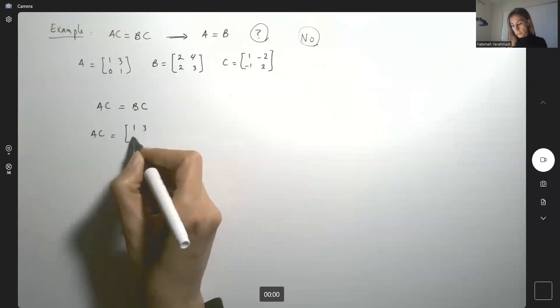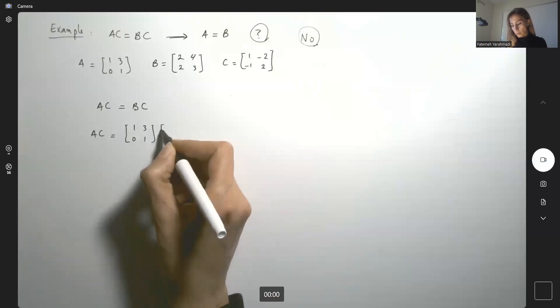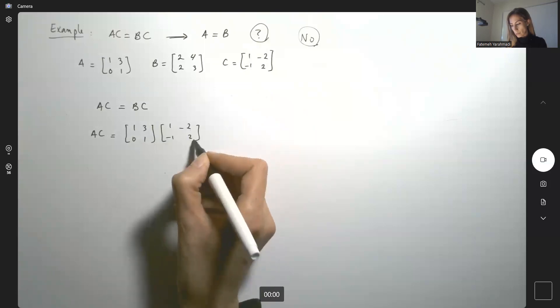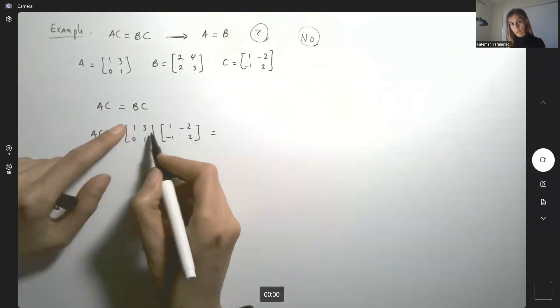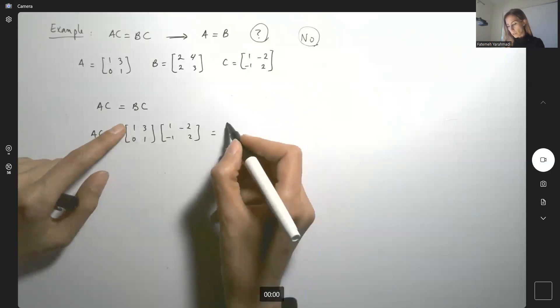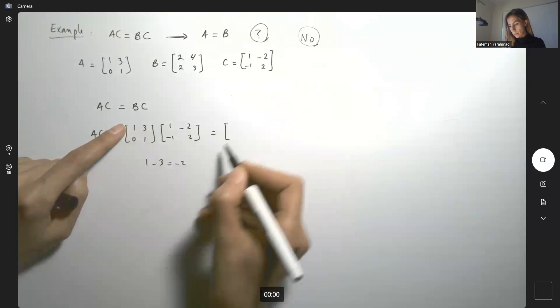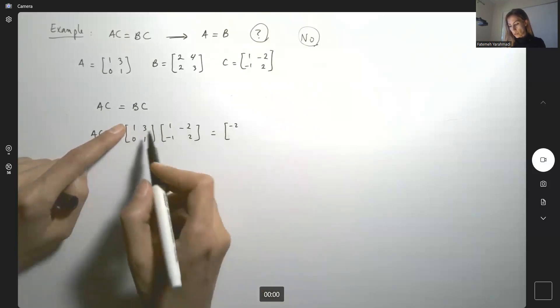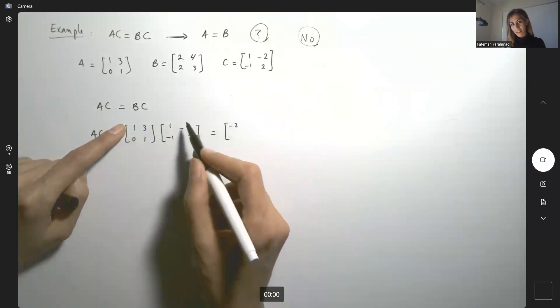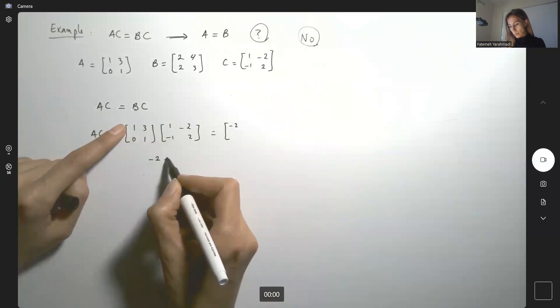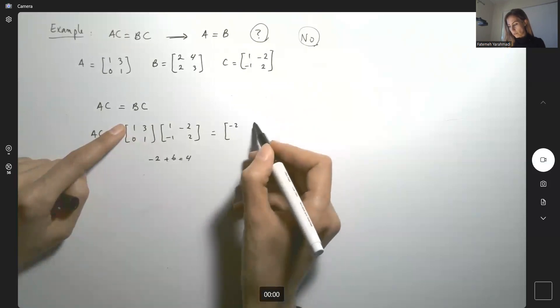So take a look at AC. A times C: 1, 3, 0, 1, multiplied by C, which is 1, negative 2, negative 1, and 2. We're going to take the first row and multiply by the first column. So 1 times 1, minus 3, negative 2. Then we're going to find the dot product between the first vector and the second vector. Get 1 times negative 2, plus 6, which is just 4.